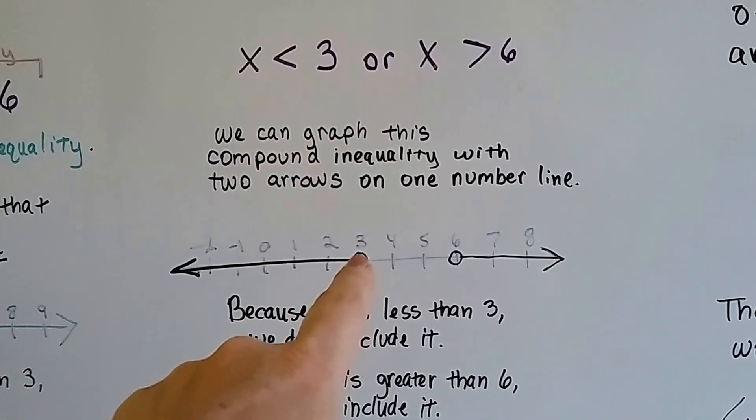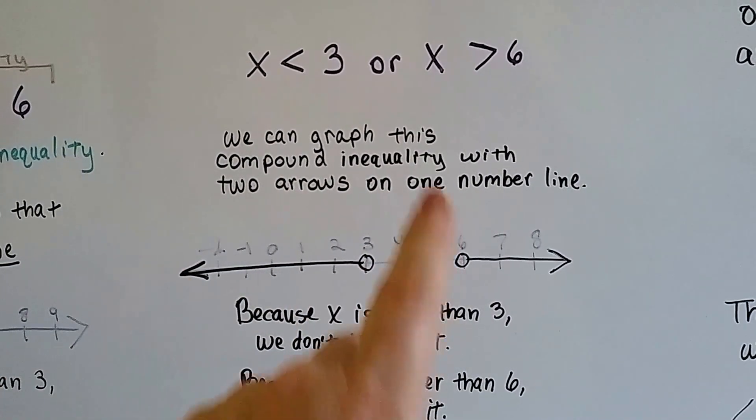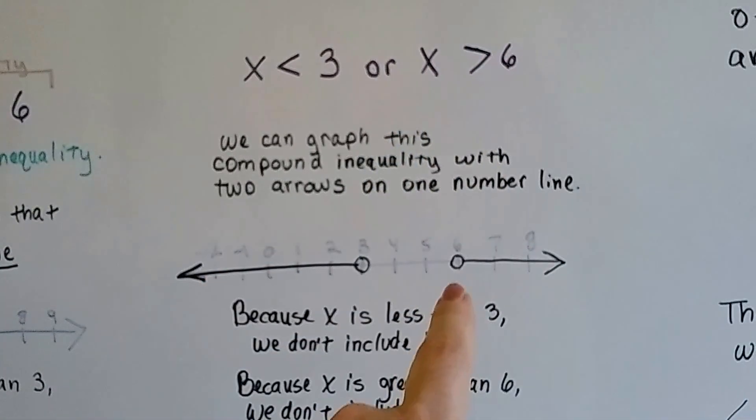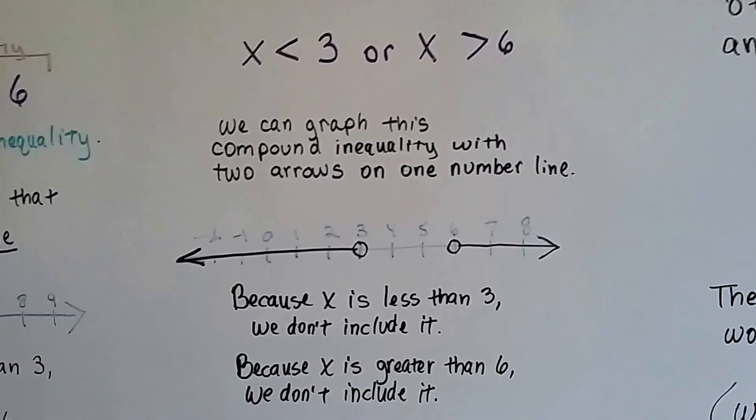So we use the open circle and we go down less. And if X is greater than 6, we use the open circle because it's not equal to 6, and we go on to infinity larger.